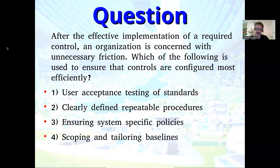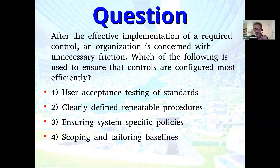So in this question: after an effective implementation of a required control, an organization is concerned with unnecessary friction. Which of the following is used to ensure the controls are configured most efficiently? Remember, all controls add friction — like brakes on my car, but I don't want them rubbing. The options are: (1) user acceptance testing of standards, (2) clearly defined repeatable procedures, (3) ensuring system-specific policies, or (4) scoping and tailoring baselines.